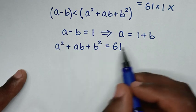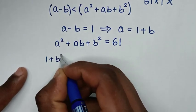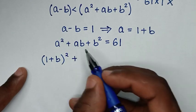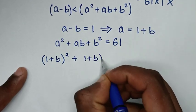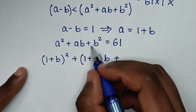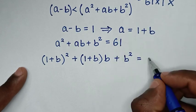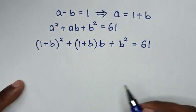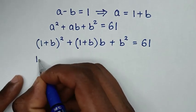Substituting a equals 1 plus b into a² plus ab plus b² equals 61, we get (1 plus b)² plus (1 plus b)b plus b² equals 61. Expanding (1 plus b)² gives 1 plus 2b plus b².